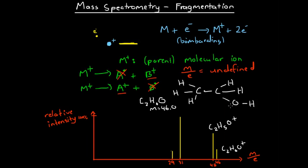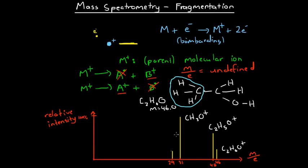So what chunk could have fallen off this molecular structure with a mass of 15, leaving a fragment with a mass of 31? Carbon has a mass of 12 and hydrogens have a mass of 1 each, so it's clear that a CH₃ group fell off — 12 plus 3 equals 15. The leftover section, which is what caused this big base peak, is the CH₃O⁺ fragment.